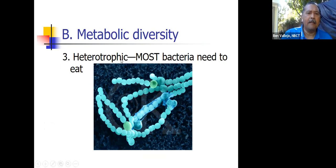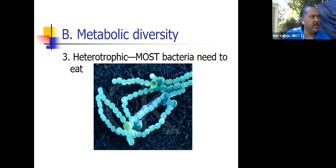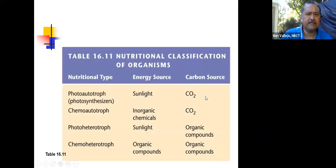Most bacteria are heterotrophic bacteria. 'Hetero' means different, and 'troph' has to do with food. So heterotrophic bacteria need to get their food from a different place. We humans are heterotrophs also — we need to get our food from a different source.